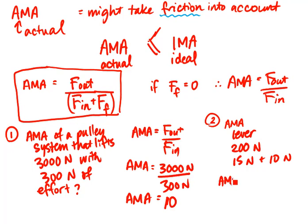my AMA would be 200 newtons over 15 newtons plus the 10 newtons of friction, which is 200 newtons divided by 25 newtons, and my actual mechanical advantage would be 8. So I have to make sure that I add the denominators first before I actually do my operation. This was actual mechanical advantage.